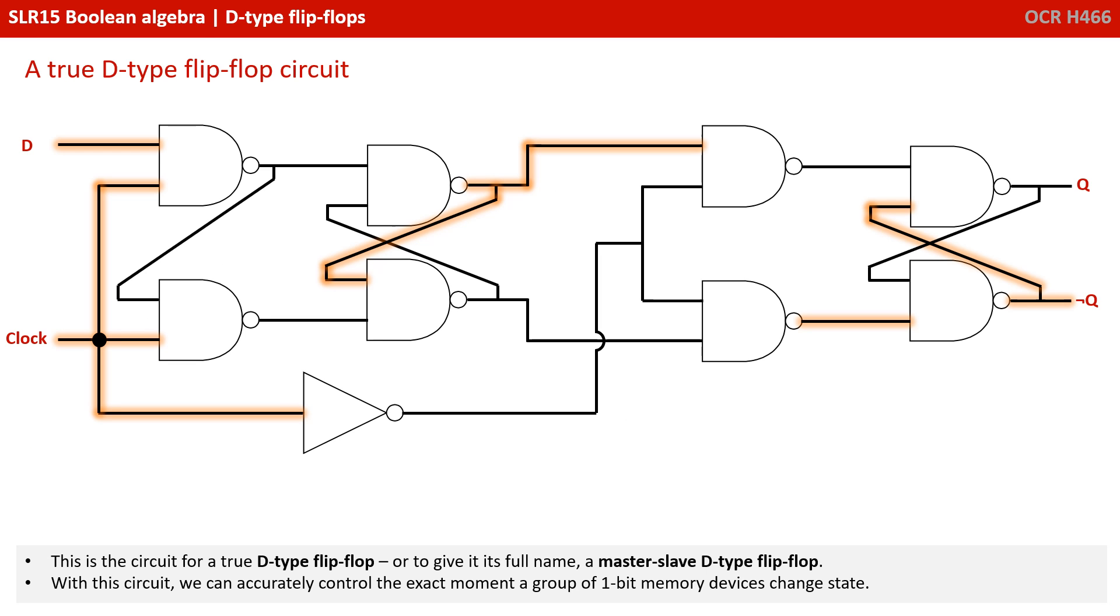This is the circuit for a true D-type flip-flop, or to give its full name, a master-slave D-type flip-flop. With this circuit, we can accurately control the exact moment a group of 1-bit memory devices changes states.